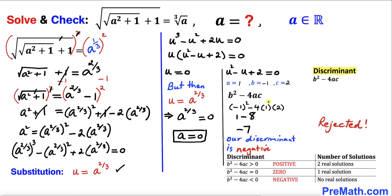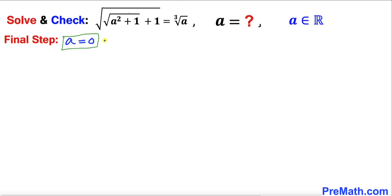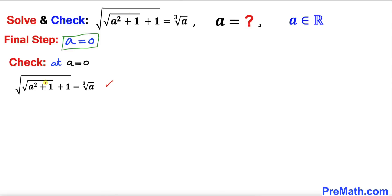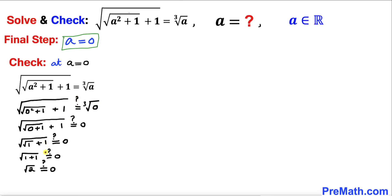Since the second factor yields no real solutions, it is rejected. Our only candidate solution is a equals zero. We now verify this by plugging a equals zero into the original equation. Substituting, we get the square root of the square root of zero squared plus one, plus one, equals the cube root of zero. Simplifying the left hand side gives the square root of two, while the right hand side gives zero.